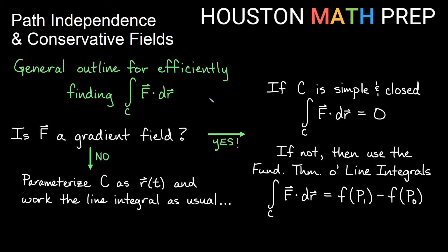Our general outline for efficiently finding the integral over a curve of F·dr: first, always check if your vector field is a gradient field. If yes, you have shortcuts. Is the path a simple closed curve? If so, the answer is zero — you're done, whether it's a triangle, square, circle, or ellipse. If it's not closed and you're going from one point to another, use the fundamental theorem of line integrals: find the potential function, plug in your endpoint, plug in your start point, subtract, and you're done. No parameterization needed.